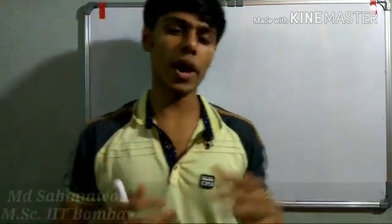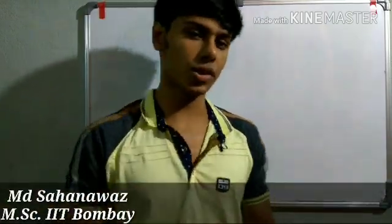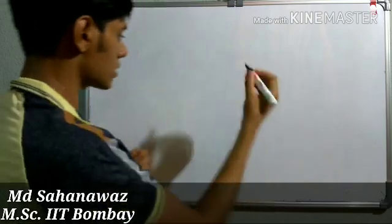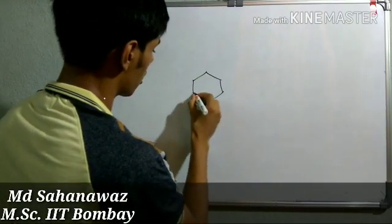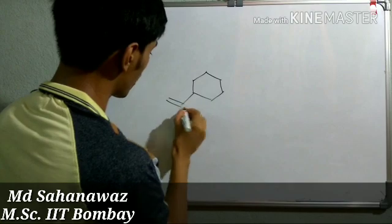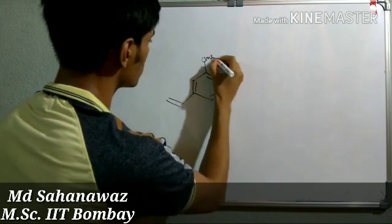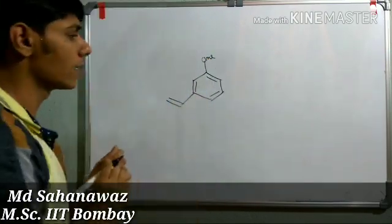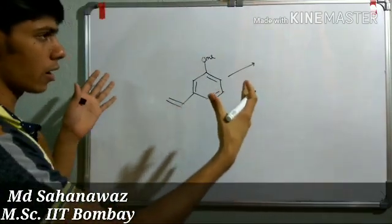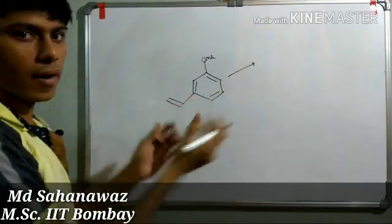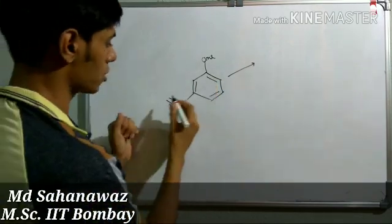In the previous video, while discussing some good examples of Birch reduction, there was a structure like this, where you have a conjugated double bond which is conjugated with an aromatic ring. That was a four-membered ring structure. I am writing only the portion which is involved in the reaction.